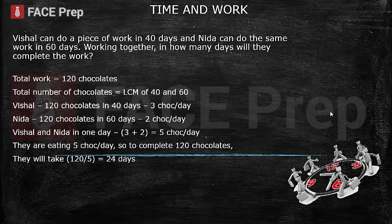They have to eat a total of 120 chocolates. Together they are eating 5 chocolates in a day, so 120 chocolates they will eat in 120 divided by 5, that is 24 days.